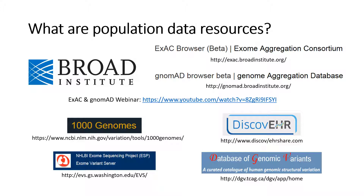After talking about the basics of population data and some considerations to keep in mind, here are some population databases that are publicly available. ExAC and gnomAD from the Broad Institute are currently the most widely used for smaller nucleotide variation, but there are several others listed here that are still available. It is important to keep in mind that ExAC and gnomAD include samples from multiple sources, including 1000 Genomes and the Exome Sequencing Project. To learn more about using the ExAC and gnomAD databases in particular, please see the included link to a webinar by Daniel MacArthur from the Broad Institute.